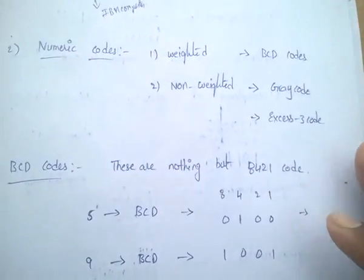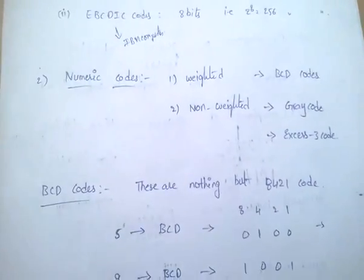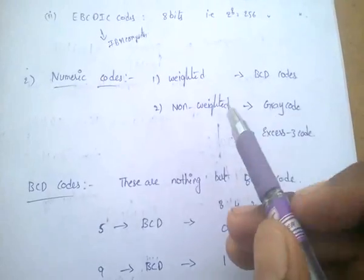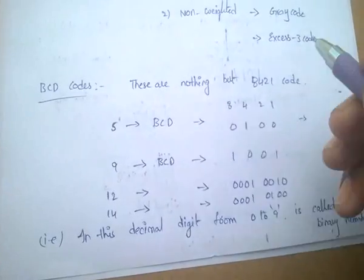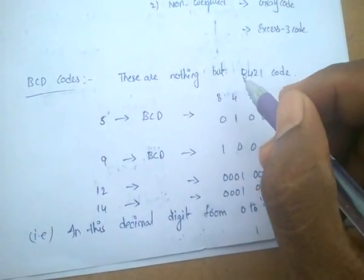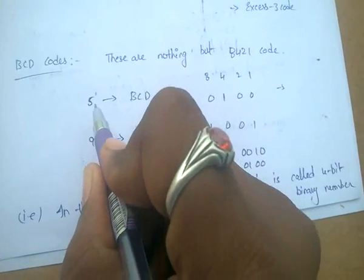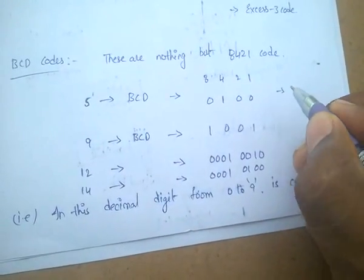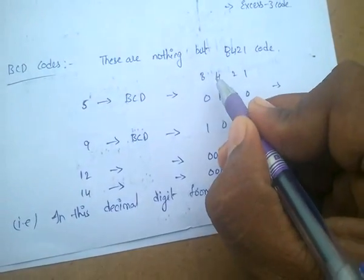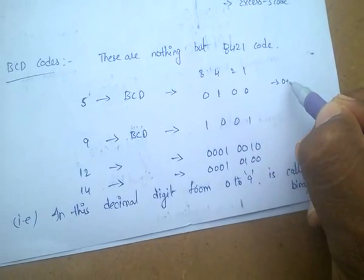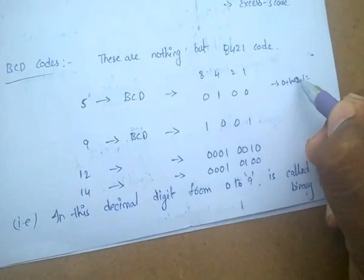Coming to the numeric codes, they are mainly two types: weighted and non-weighted. BCD codes are nothing but weighted codes. Non-weighted codes are Gray codes and XS3 codes. Coming to the BCD codes, they are nothing but 8421 codes — that means the representation of binaries in the form of 8421. For representation of 5 in case of BCD, that is 0100. That means to get 5, we can add 4 plus 1, that means 0 plus 4 plus 2 plus 1 equals 5.